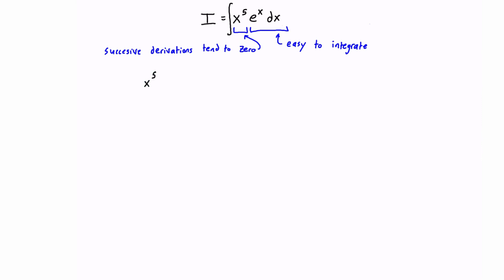All you have to do is just write each part, so let's write x to the fifth on one side and e to the x dx on the other side. We're going to apply our successive derivations to the part that is going to tend to 0.